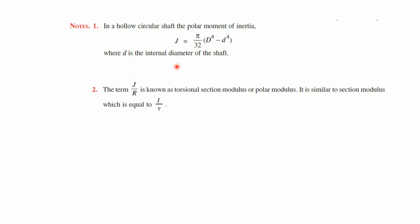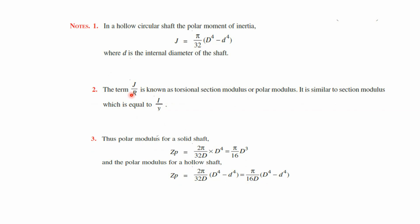The term J/R is known as the torsional section modulus or polar modulus, analogous to I/y in the flexural formula. The polar modulus is denoted Z_p = I_p/R = J/R. For a solid shaft, Z_p = π/16 × d³. For a hollow shaft, Z_p = π/16 × D × (D⁴ − d⁴)/D⁴ — more precisely, Z_p = (π/16D) × (D⁴ − d⁴). These formulas are required when solving numericals on torsion and polar moment of inertia.